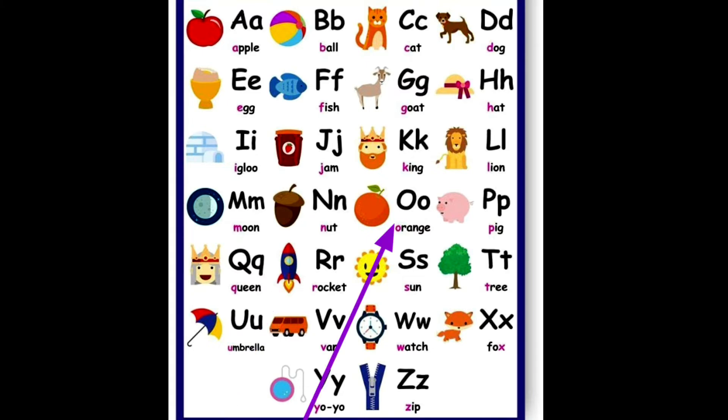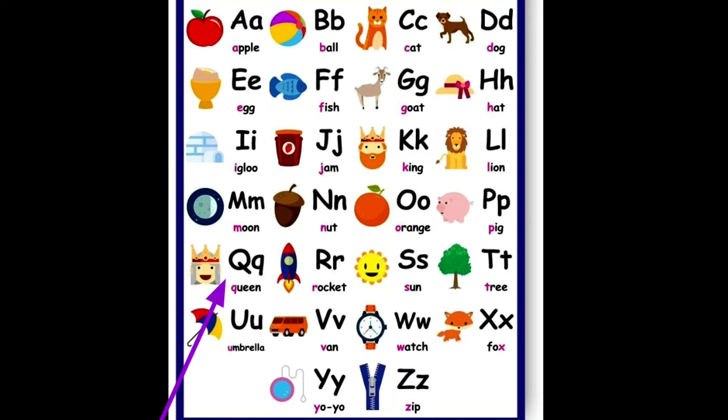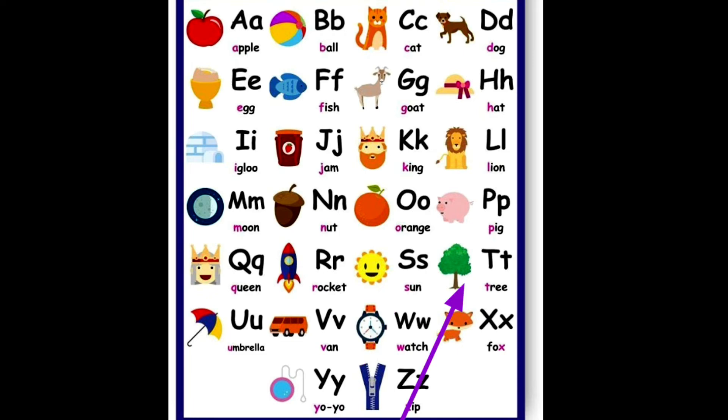P for pig, Q for queen, R for rocket, S for sun, T for tree.